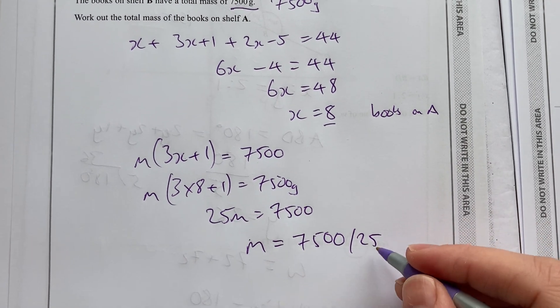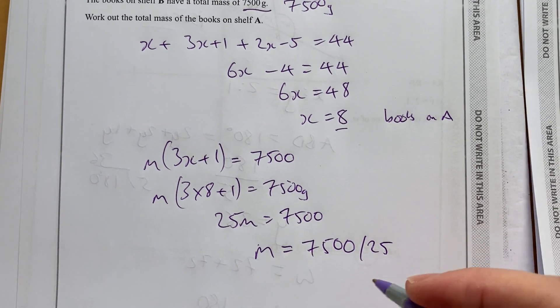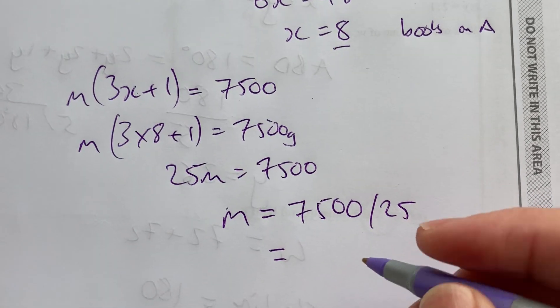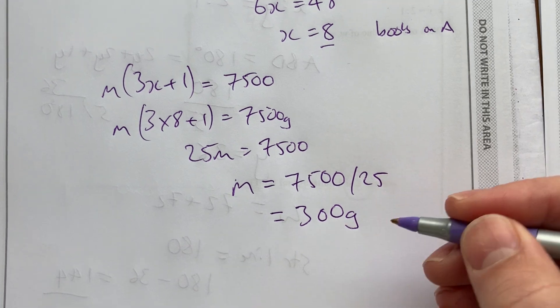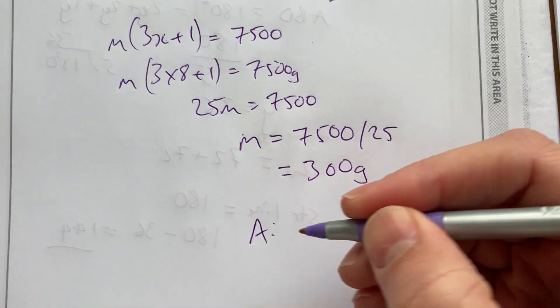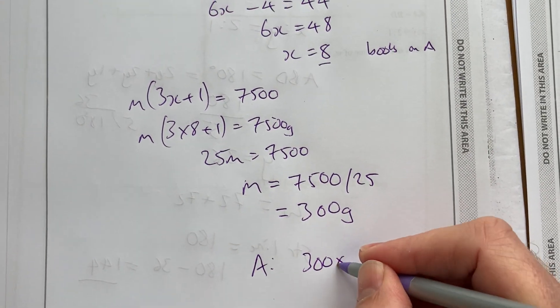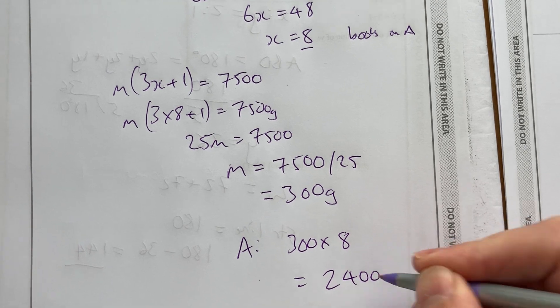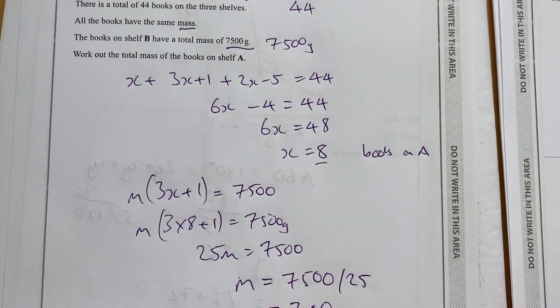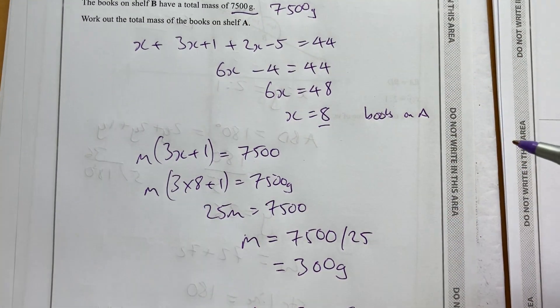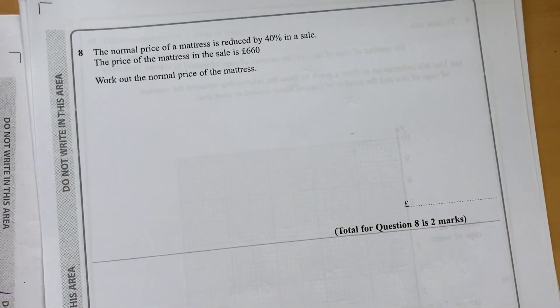If I know that there are 4 in 100, and there's 75 hundreds there, we're going to get 300. So the mass for each book is 300 grams. And then for A's, to answer the question, total mass of the books on shelf A, we do 300 times 8. We get 2,400. So that's a lot of marks there, 5 marks, worth spending some time on that question, setting up two equations.